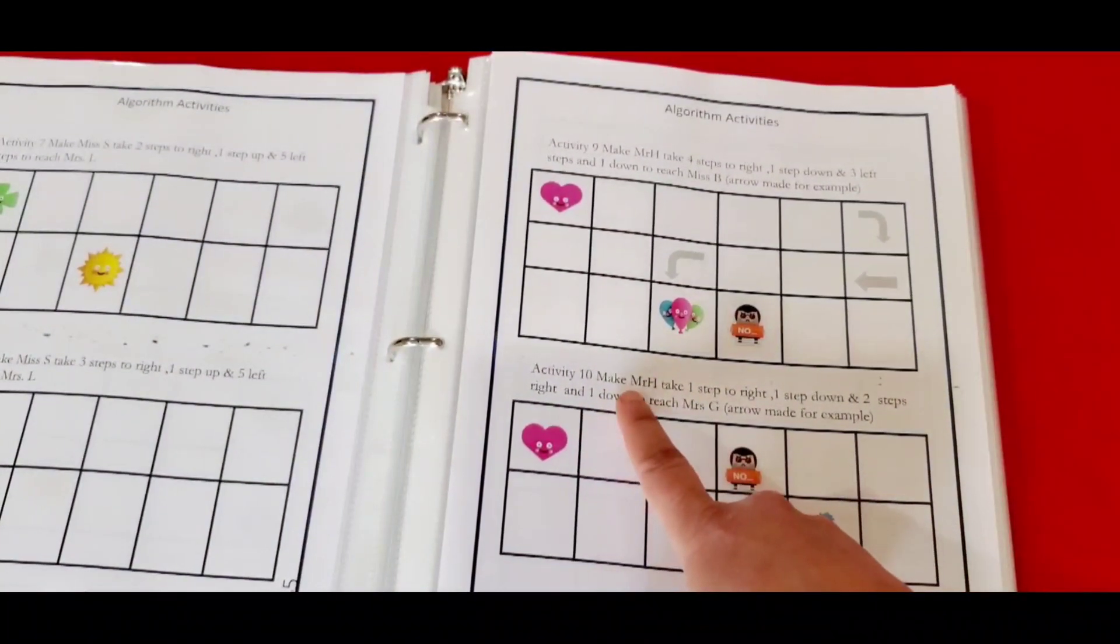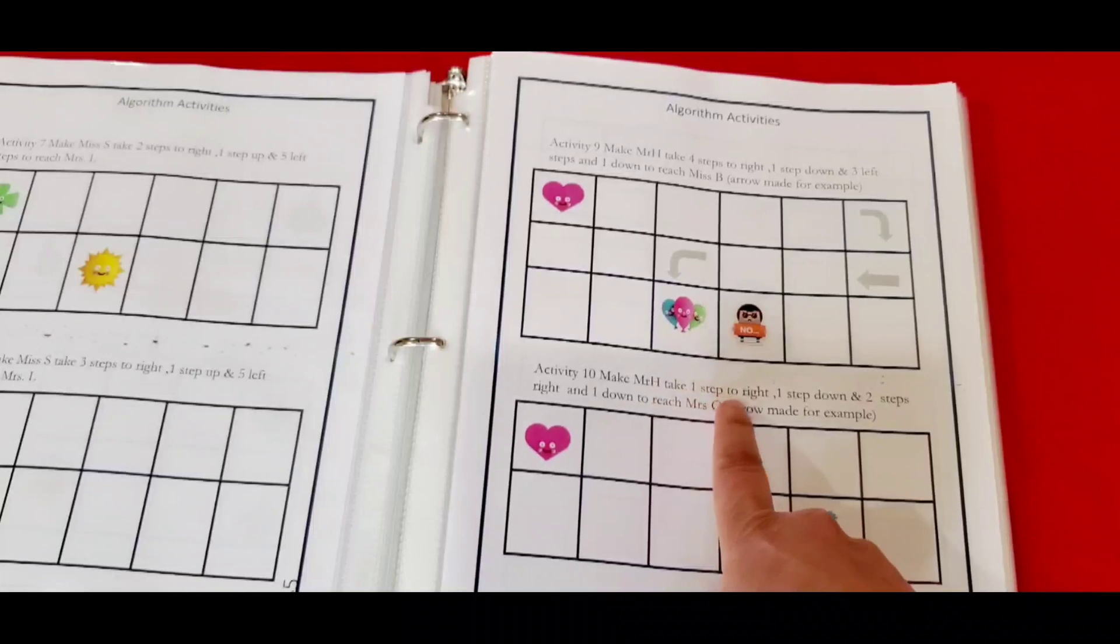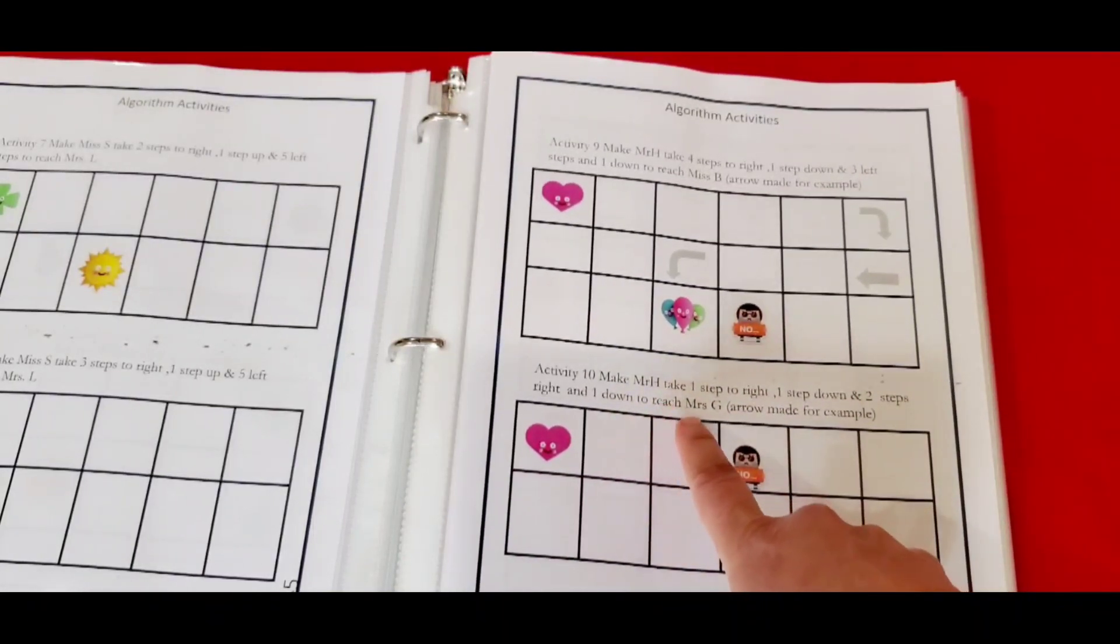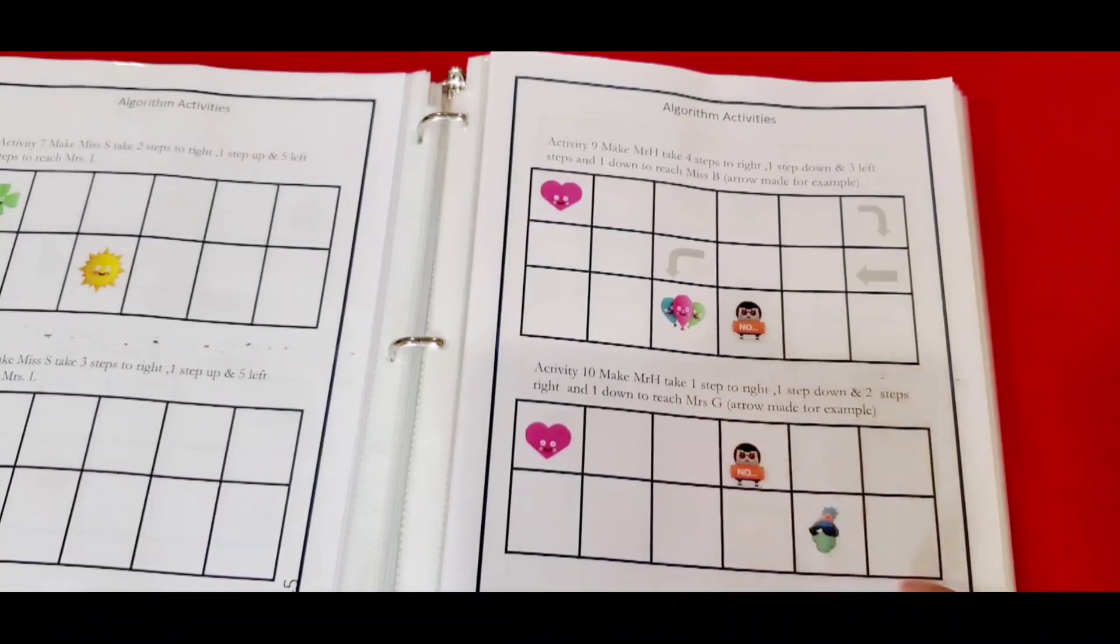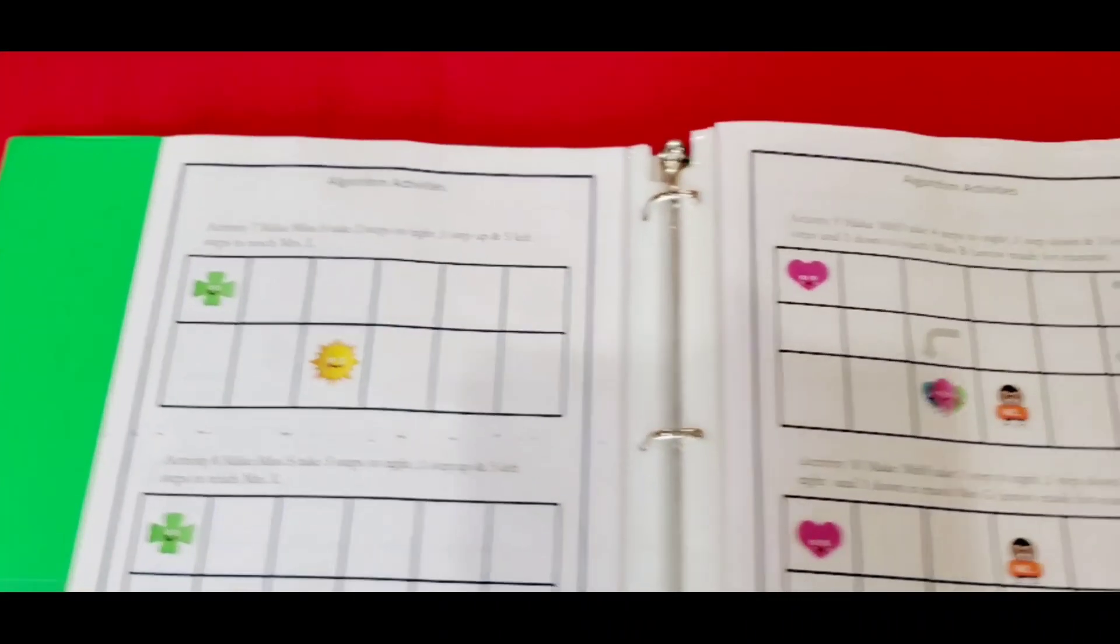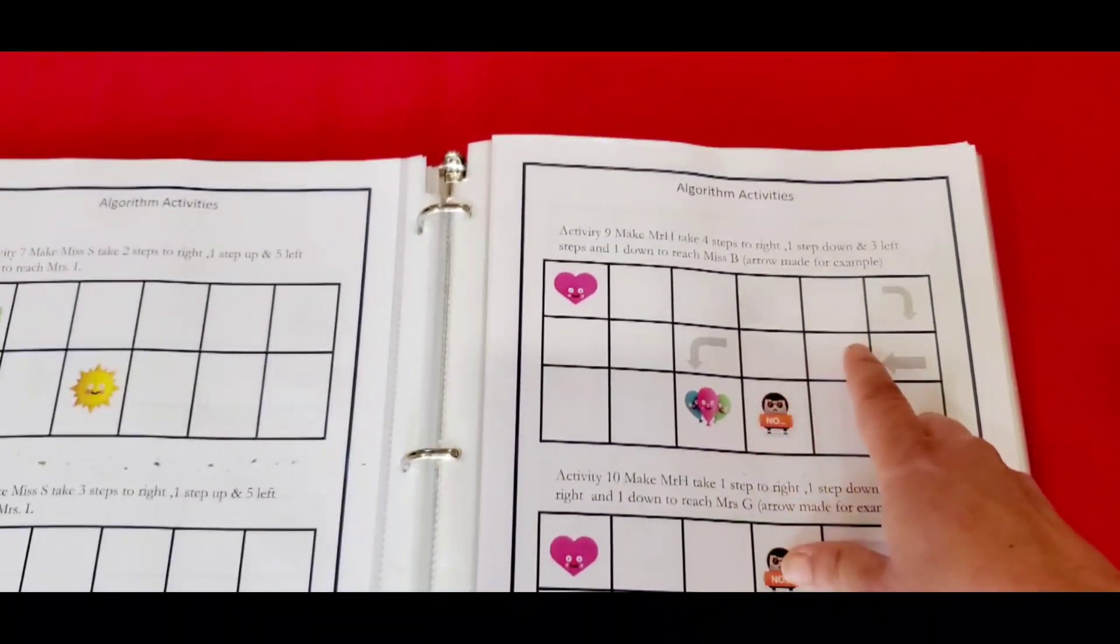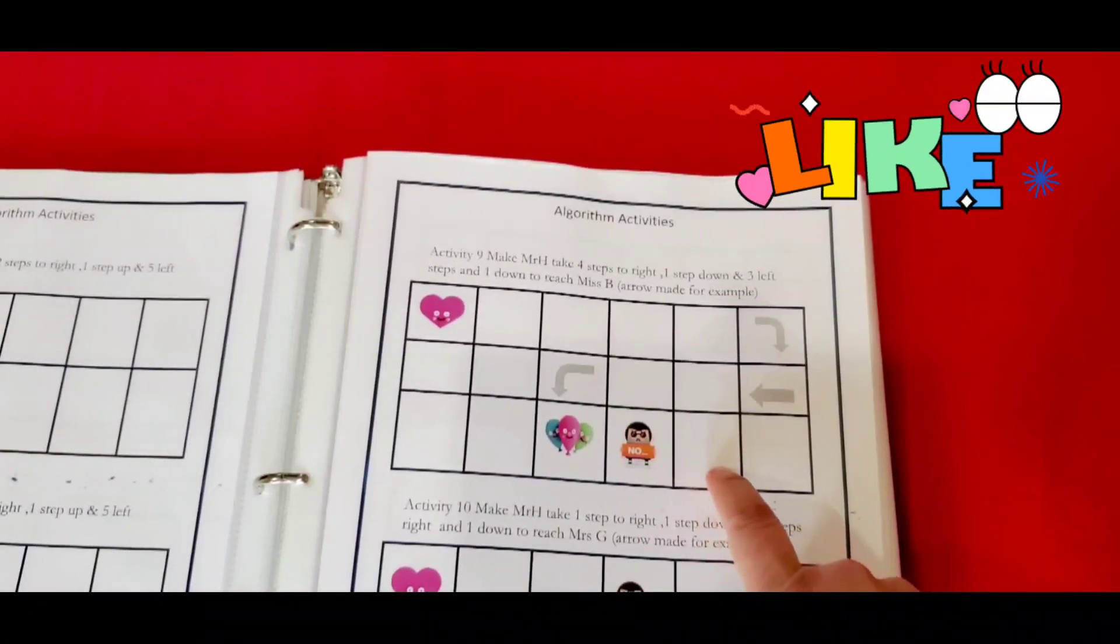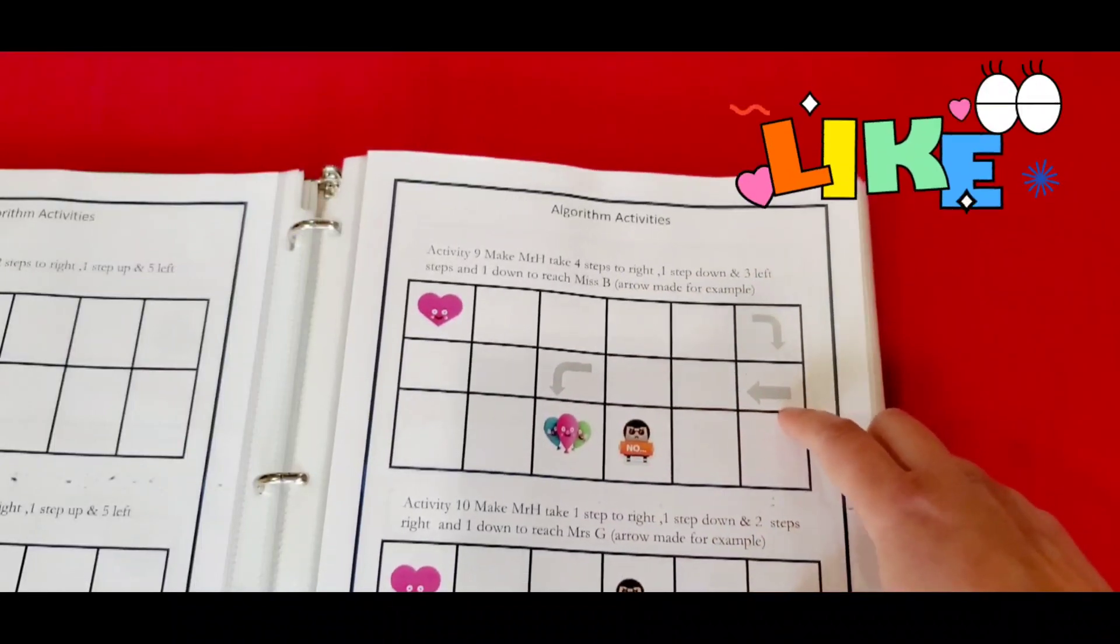Similar to activity number 10, make Miss H take one step to the right, one step down, two steps right and one down to reach Miss G. Arrows are made for example, and where you don't have the arrows, that's where you need to create it by yourself. If you look at here, there are a lot of things going on and the arrows are given for representation.